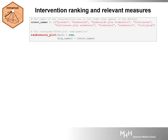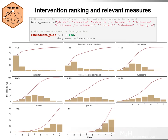The rankogram_sucra plot function creates a plot for each intervention that combines two popular hierarchy plots — namely the rankogram and the SUCRA plot. The interventions are sorted from best to worst based on the SUCRA value shown in the top left corner of each plot. This function can also display hierarchy results from two outcomes.